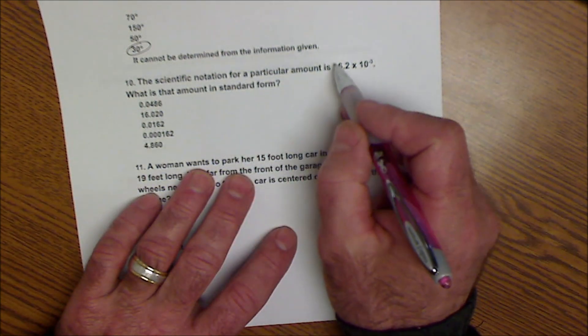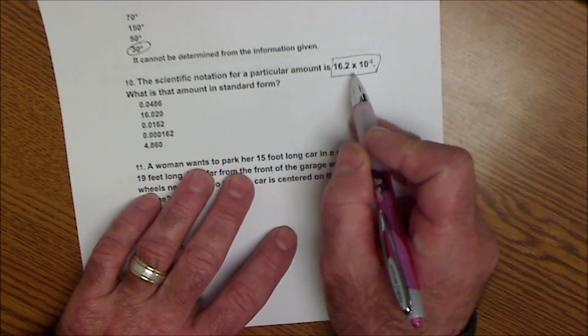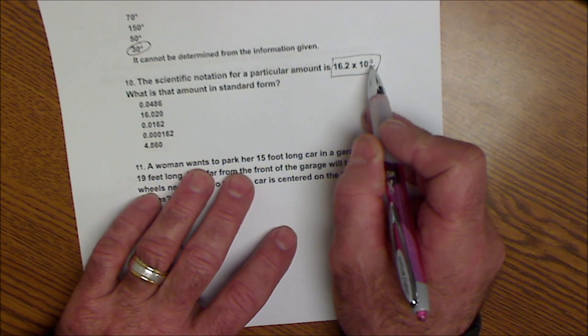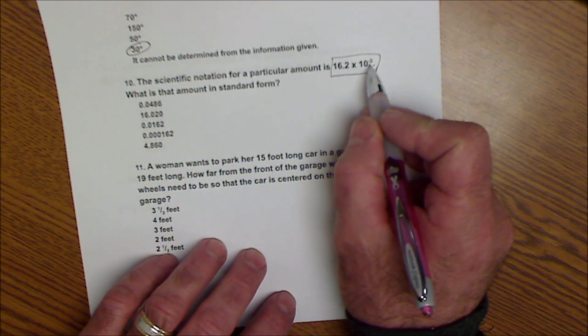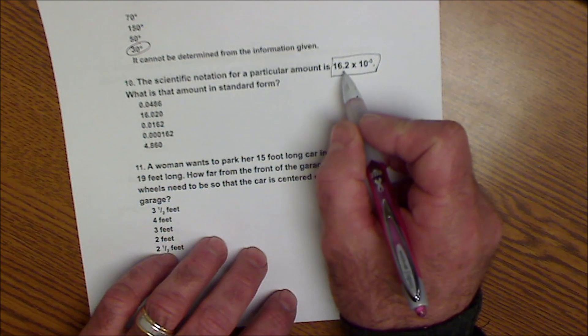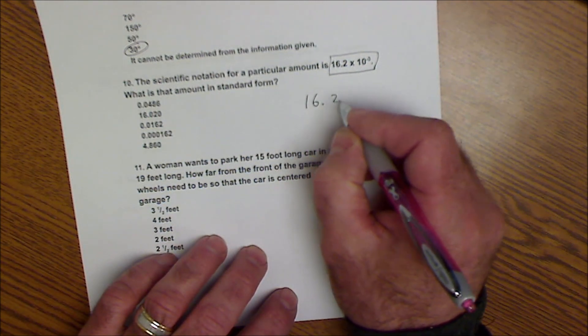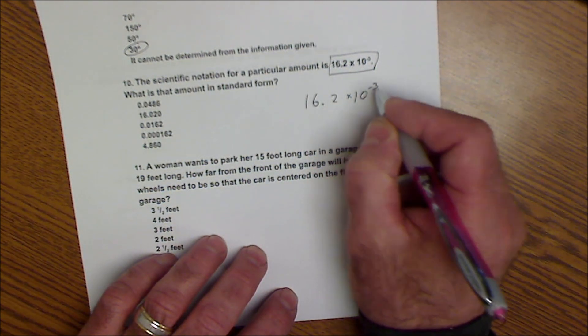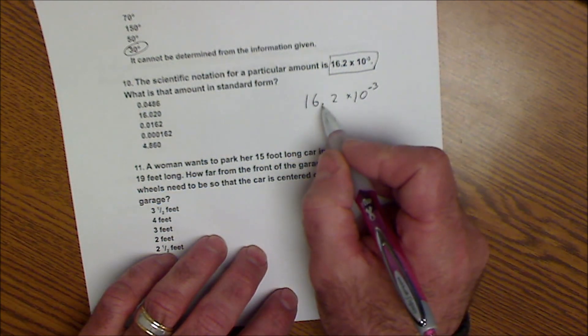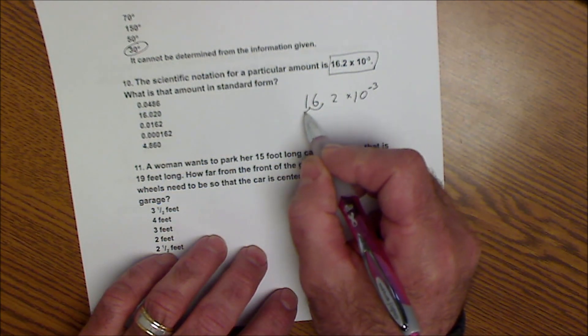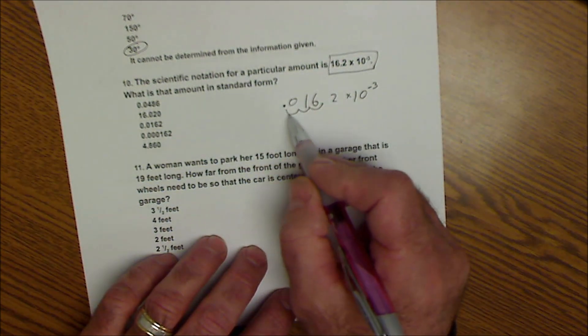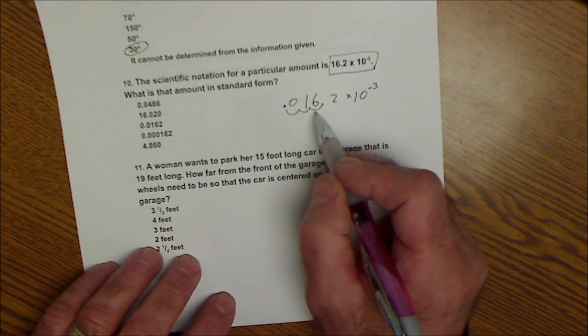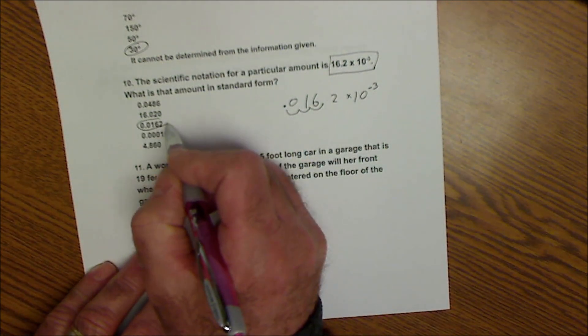Okay, so this is scientific notation, which is a number times ten to a certain power. And how this works is it just tells you where to move the decimal places, how many to go over. So a negative three says I start here. So I have 16.2 times ten to the negative three. I go over three places to the left. So one, two, three. There's no number there, so it has to be a zero. So one, two, three. So my answer is 0.0162, this value right here.